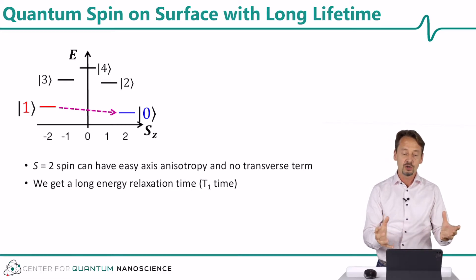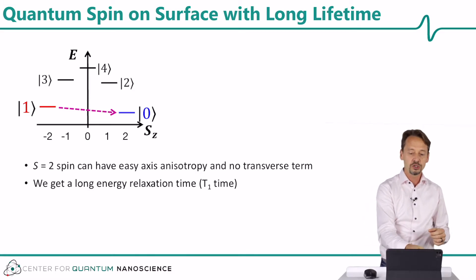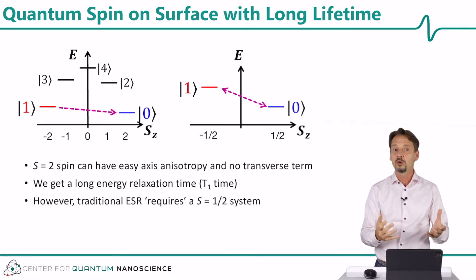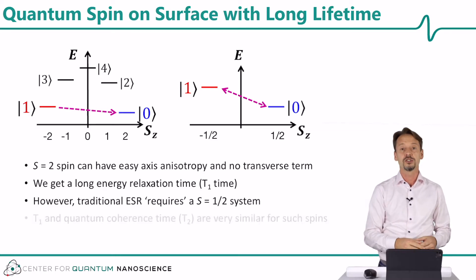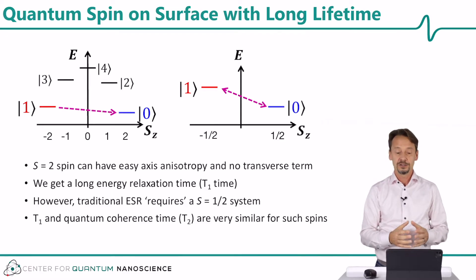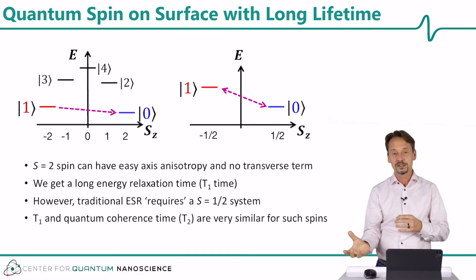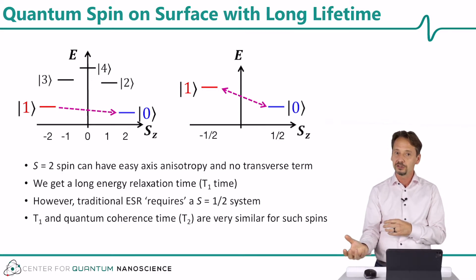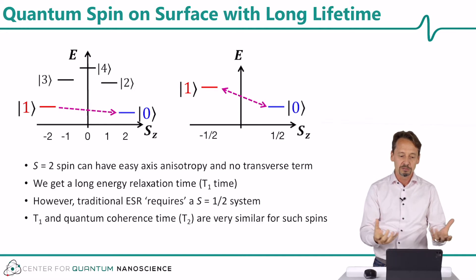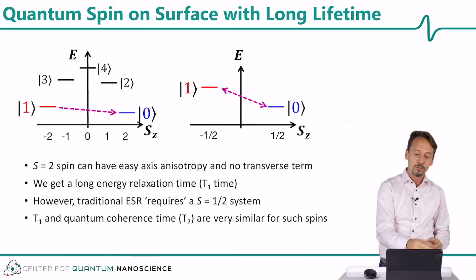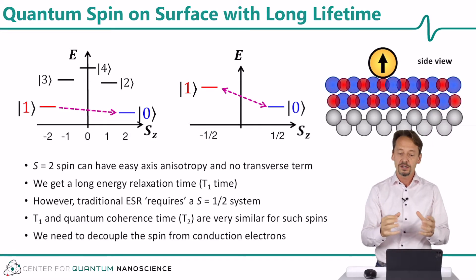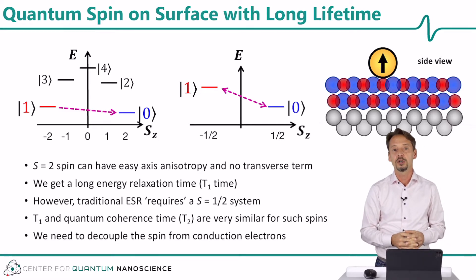The problem here is that we have a non-traditional ESR system. A traditional ESR system is always a spin one-half type system, and in a spin one-half type system we do not have any magnetic anisotropy, so spin relaxations are correspondingly fast. We need to bridge between the fast spin relaxation expected in traditional ESR systems and these easier-for-STM systems with magnetic anisotropy. We can do this by putting the spins on a thin insulating film such as magnesium oxide, our favorite material to do ESR-STM.